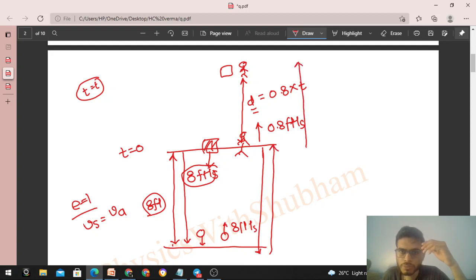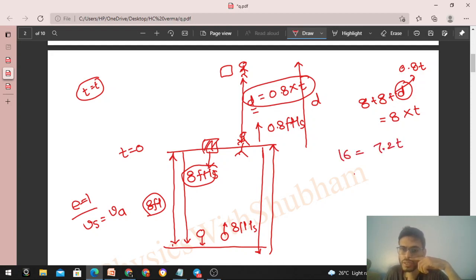The pillow went down 8 feet, came back up 8 feet, and further went to meet the man. The man traveled distance d. So actual total distance is 8 plus 8 plus d. This is the distance traveled by the pillow with a constant speed of 8 feet per second in time t. So distance equals speed into time. Now d's value, where will we put it from? d equals 0.8 into t. So put d's value as 0.8 into t. So from here time comes out: 16 equals 7.2t. So t equals 16 upon 7.2.